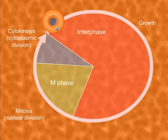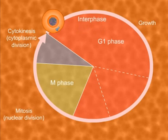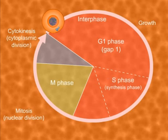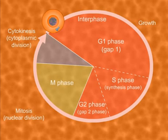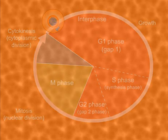The cell is engaged in growth and metabolic activities. This phase is further divided into three phases: G1 phase or gap 1, S phase, also known as synthesis phase, and G2 phase or gap 2 phase. Now let us look at these phases one by one.